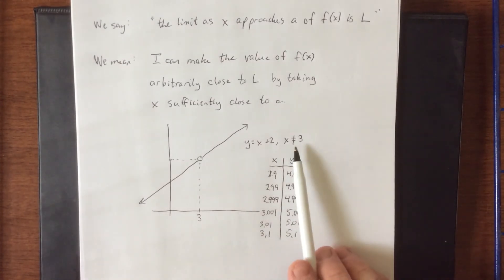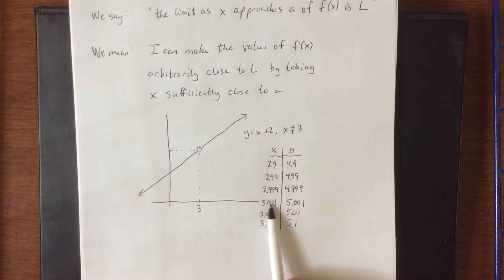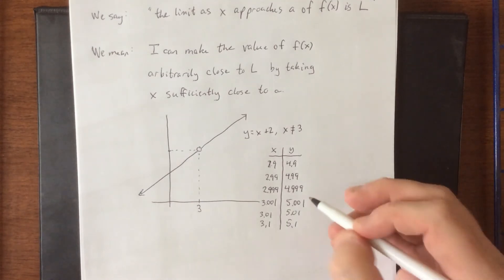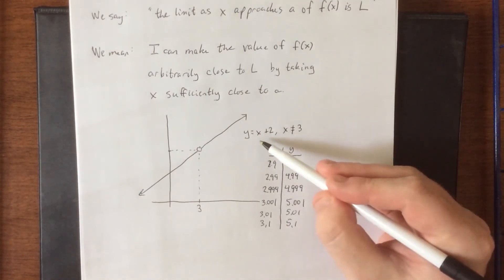What do I actually get if I plug in X equals 3? I get an open circle. This is undefined. It is not defined. However, as X approaches 3, what does it look like the Y value is approaching? Hopefully you're seeing that it's the same sort of thing that you would get by simply plugging in X equals 3 here.